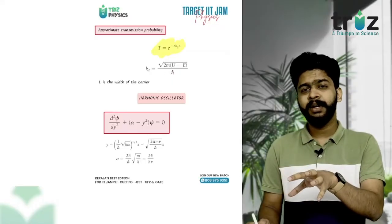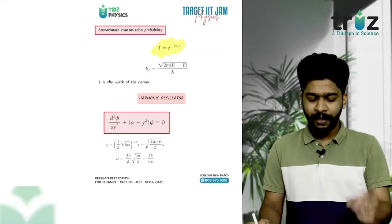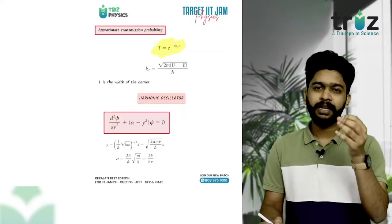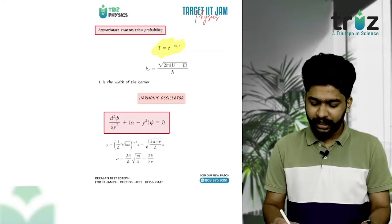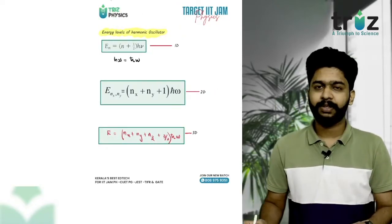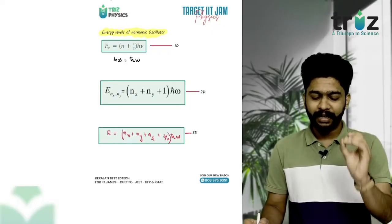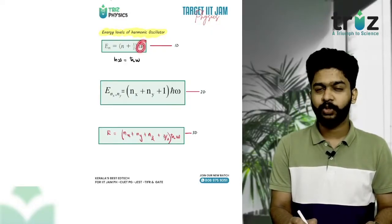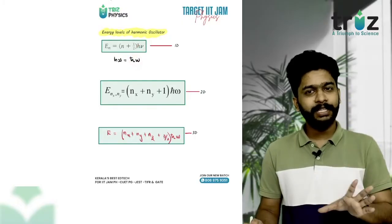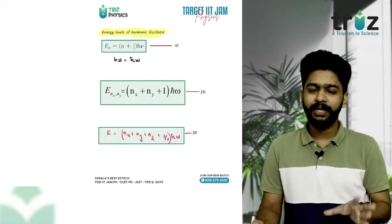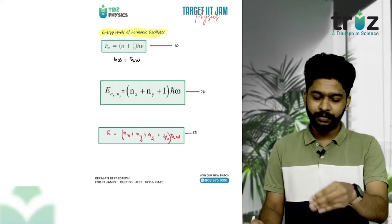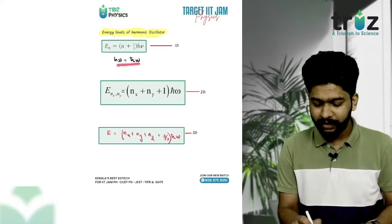This is the harmonic oscillator. For the one-dimensional harmonic oscillator, the energy is E_n = (n + 1/2)hν, where hν = ħω. Here ħ = h/2π and ω = 2πν. You can substitute these to get the energy in terms of ω.